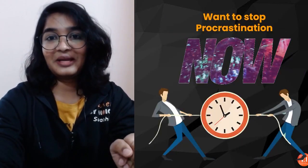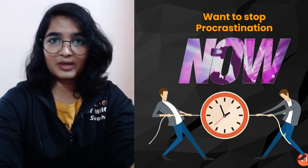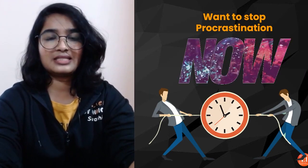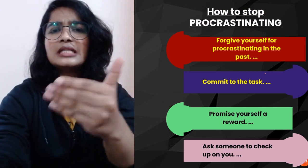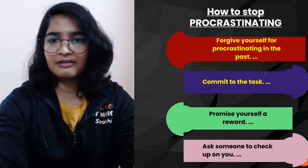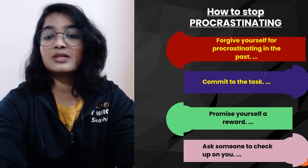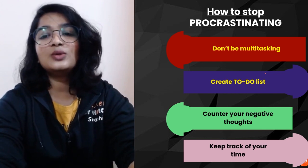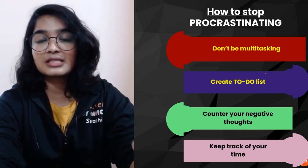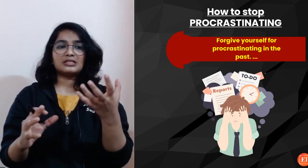Now let's figure out the ways how you can stop procrastinating. First thing, these are the few steps: forgive yourself for procrastinating in the past, commit to the task, promise yourself a reward, ask someone to check upon you, don't be multitasking, create to-do lists, counter your negative thoughts, keep track of your time.